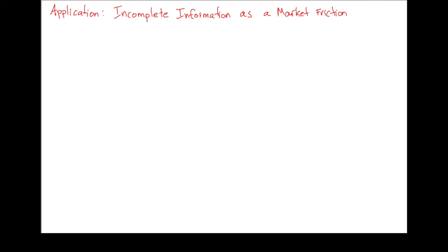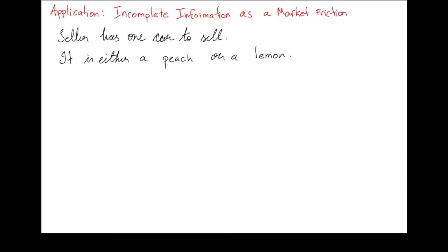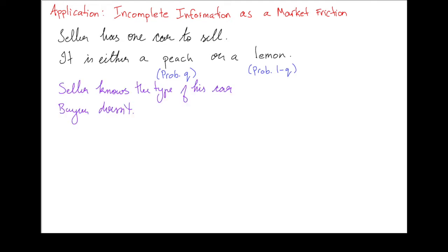You've got a used car salesman who's selling a car. This car could either be a peach, which is a really nice car, or it's a lemon, which is not a very good car. From the outside, you can't really tell. The probability that it's a peach is Q, and the probability that it's a lemon is 1-Q. The seller knows whether his car is a peach or a lemon, but the buyer doesn't — the buyer only knows the probabilities.